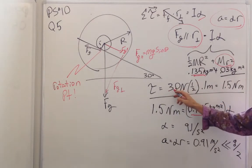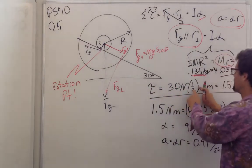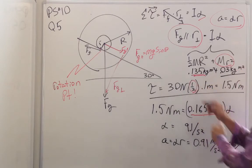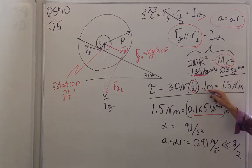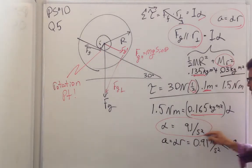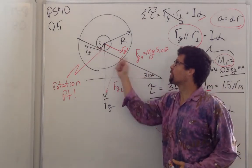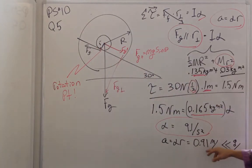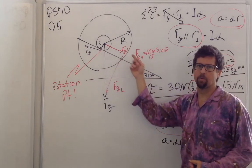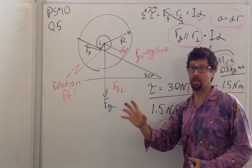The torque we can get very easily, so force of gravity times the sine of theta, which is one-half now, times the radius. And we divide that out and we see we get an alpha, we get an angular acceleration of about nine per second squared, and we can find the linear acceleration by multiplying by the radius, and we get 0.9 meters per second squared accelerating downward, about one meter per second squared.